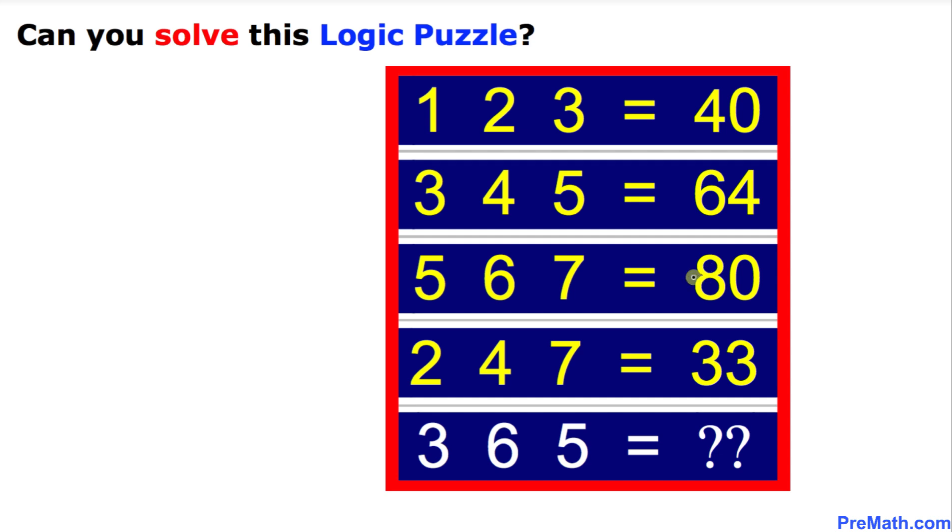Five six seven is going to give us 80, two four seven is going to give us 33. Now the question mark is: what number three six five is going to give us at this location? Can you figure out the answer on your own? You may pause the video and take your time.